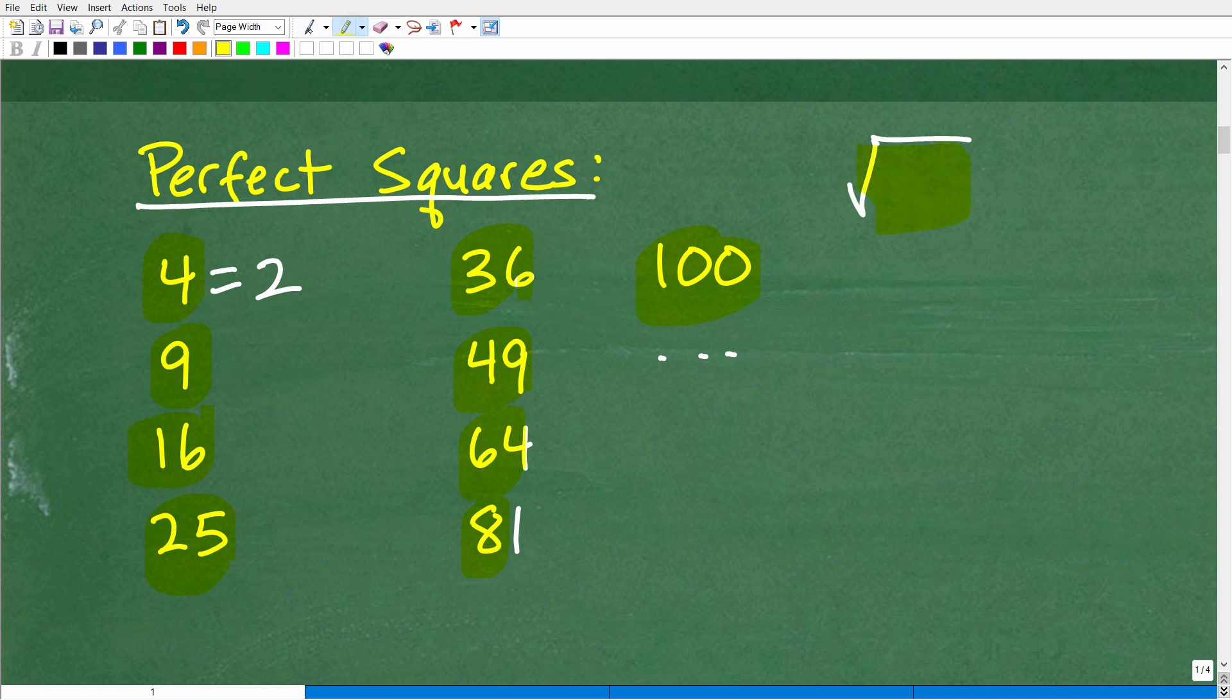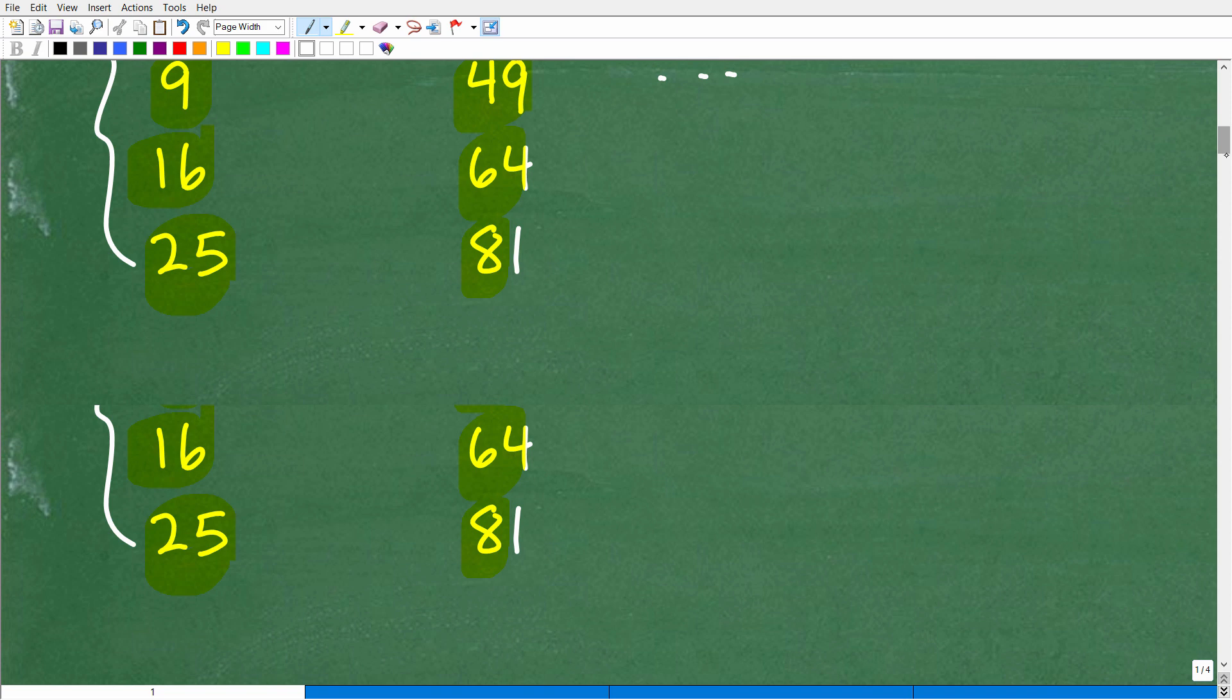So when we're trying to simplify a square root, you want to look at the factors. You're like, alright, can I break this up into some number times another number such that one of these numbers is a perfect square? So let's take a look at another example.